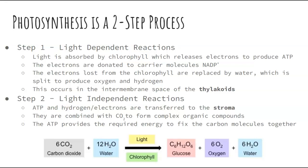So let's dive right into photosynthesis. It is a two-step process, which is nice, because cell respiration is like a 3.5-step process — the link reaction is kind of a half step. There are two steps in photosynthesis. Step one is light-dependent, so it needs light to happen, and step two is light-independent, where it does not need light. All of this happens in the chloroplast of a plant cell.